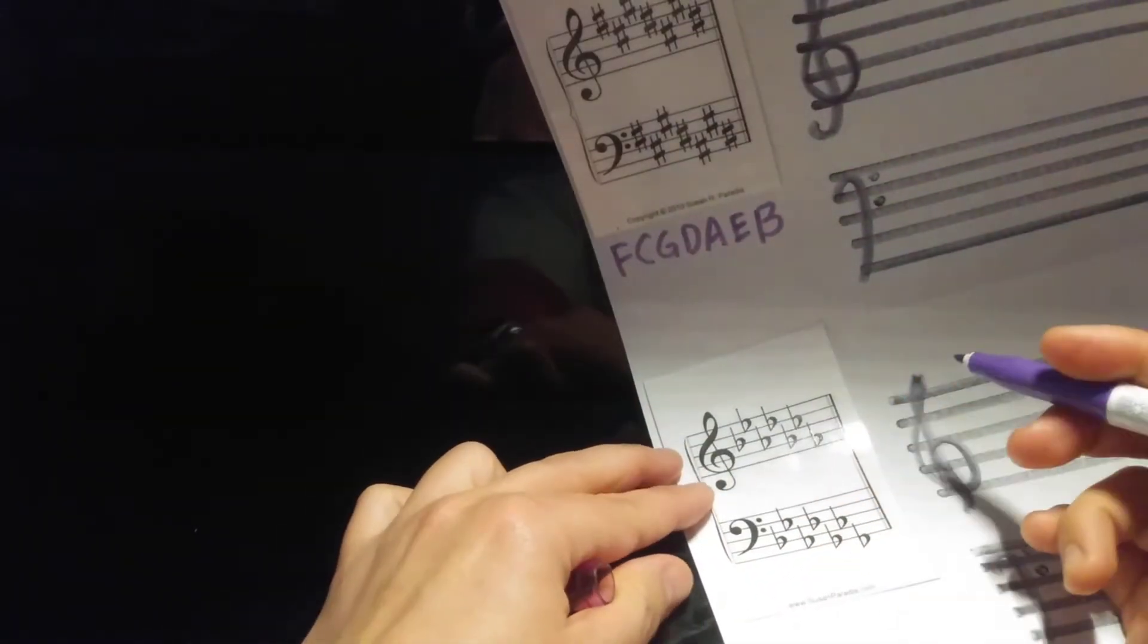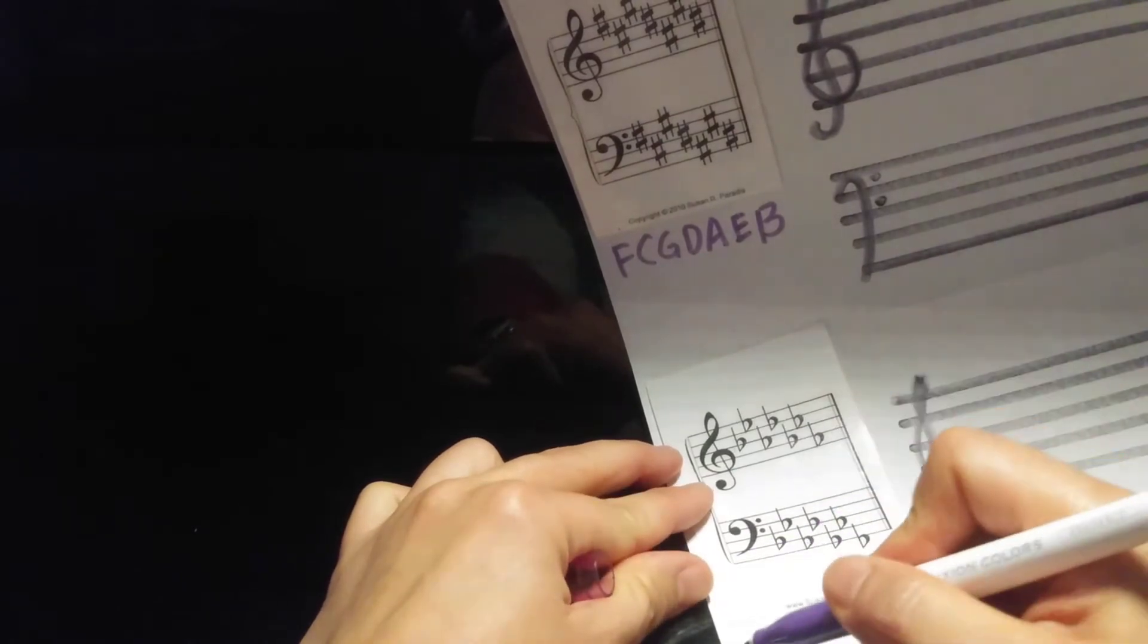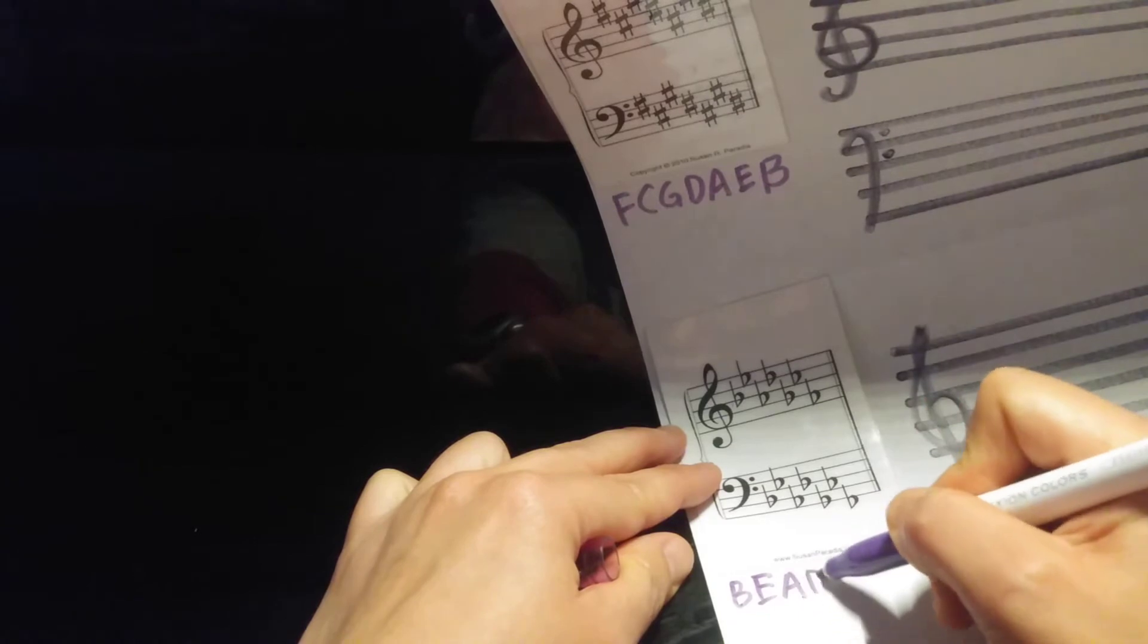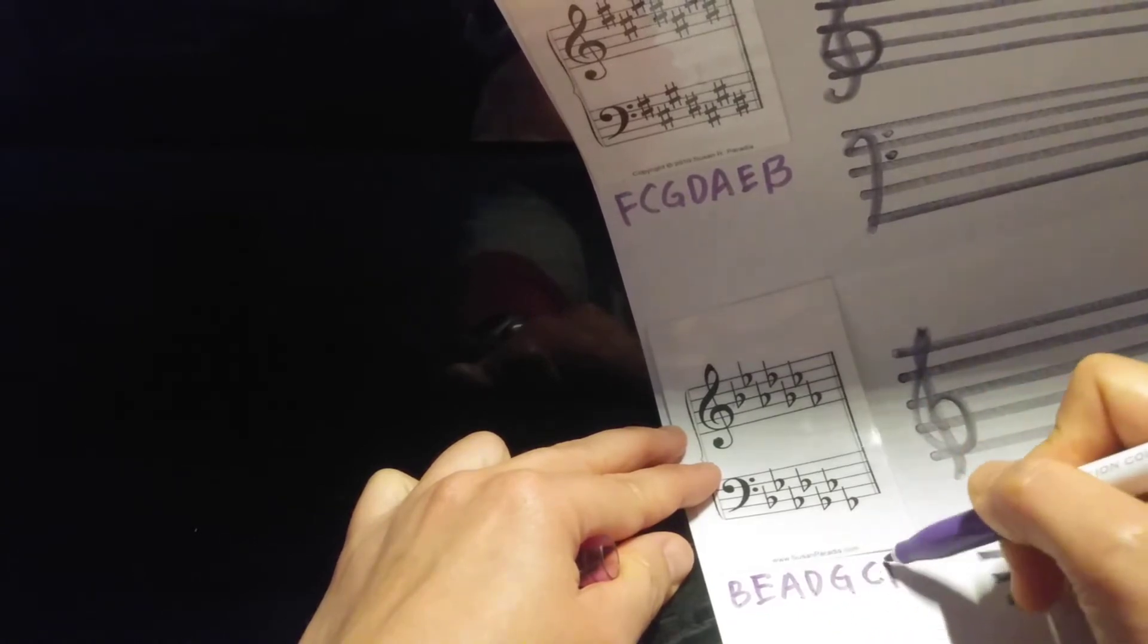The order of flats is exactly the reverse of the order of sharps. So B, E, A, D, G, C, F.